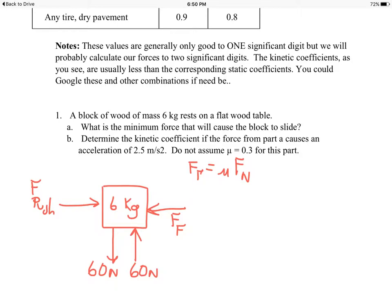Part A: what is the minimum force that will cause the block to slide? The minimum force, the force of friction, we'll look for the maximum friction, which is mu, wood on wood. If you look at the table, wood on wood, the static frictional coefficient is 0.5 times the normal force, and the normal force here is 60 newtons. So the force of friction here is 30 newtons maximum.